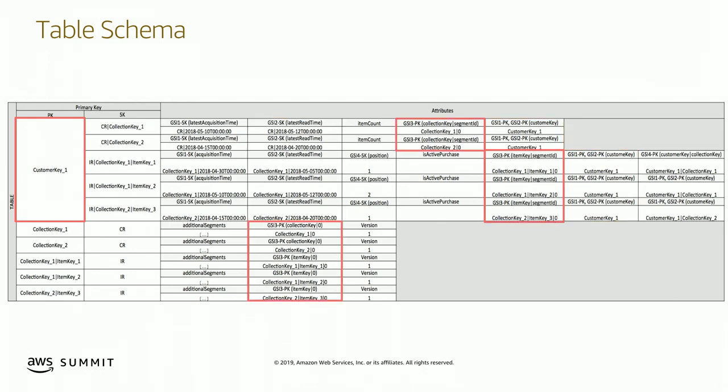GSI three is where we query across partitions — the other side of the many-to-many between customers and collections. How many customers own a collection can be millions. As customers acquire items within collections, it's going to build very large partitions. DynamoDB has a partition-level throughput of 1,000 WCUs or 3,000 RCUs. As the number of customers who own those collections increases, we'll need to add additional logical storage partitions to increase the throughput of that workload. This is right sharding.